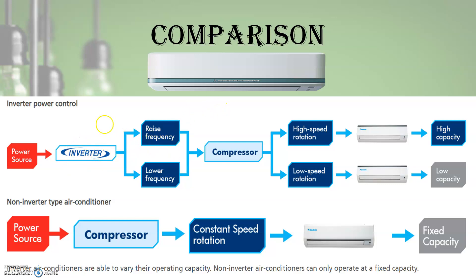With the inverter, speed control is done to achieve temperature control. It can operate at high speed by making the frequency high, or at very low speed by making the frequency lower — so capacity can vary from high to low. For example, a 1.5 ton inverter AC can work from 0.3 to 1.7 ton based on cooling requirement, whereas a non-inverter AC can only work at a fixed 1.5 ton.